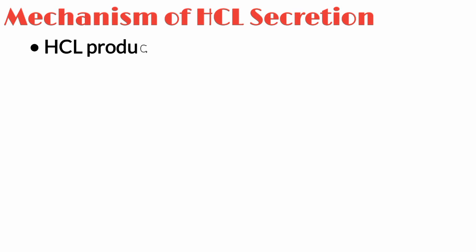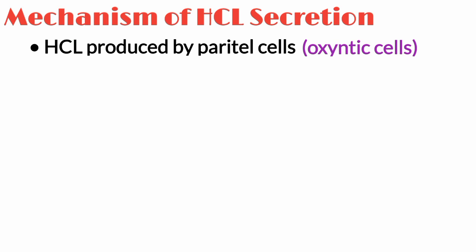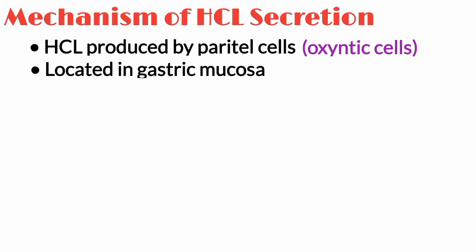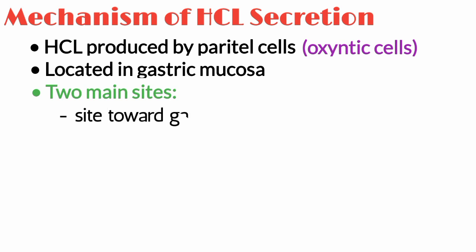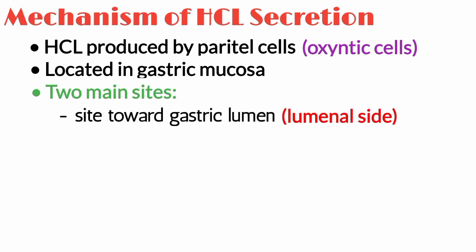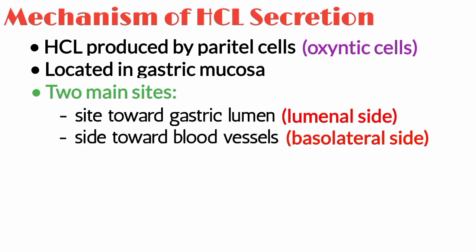HCL is produced by the parietal cells of the stomach, which are also known as oxyntic cells. The parietal cells are located in the gastric mucosa. These cells have two main sites: the site toward the gastric lumen is called the luminal side, and the opposite side toward the blood vessels is called the basolateral side.